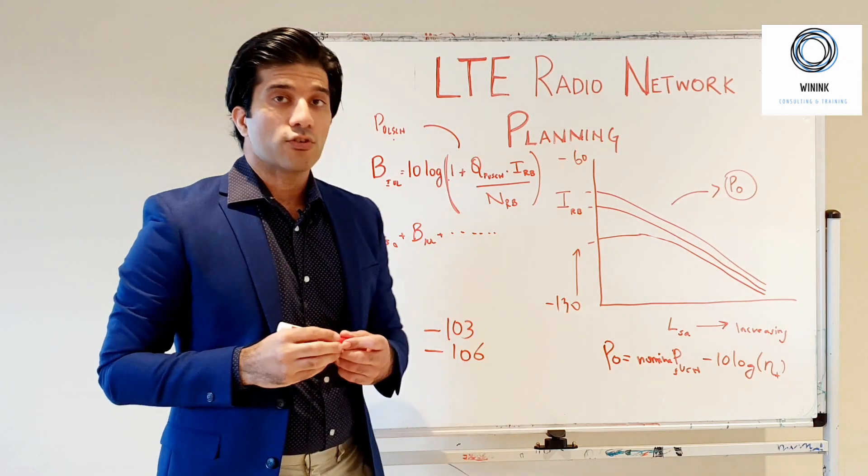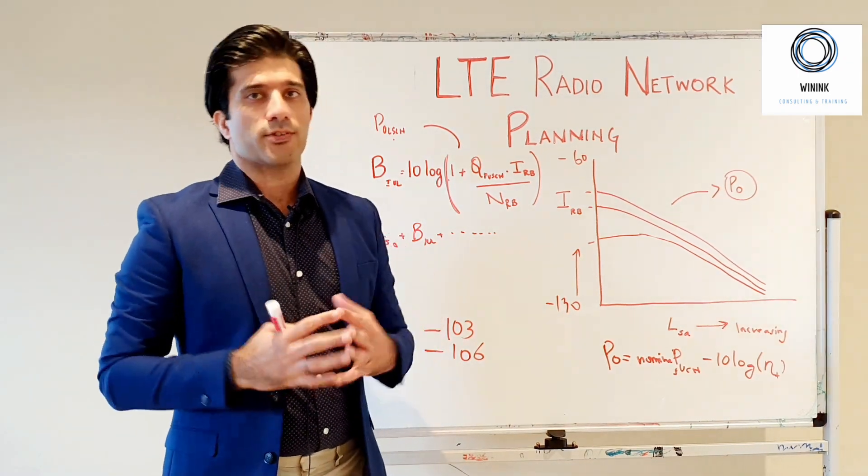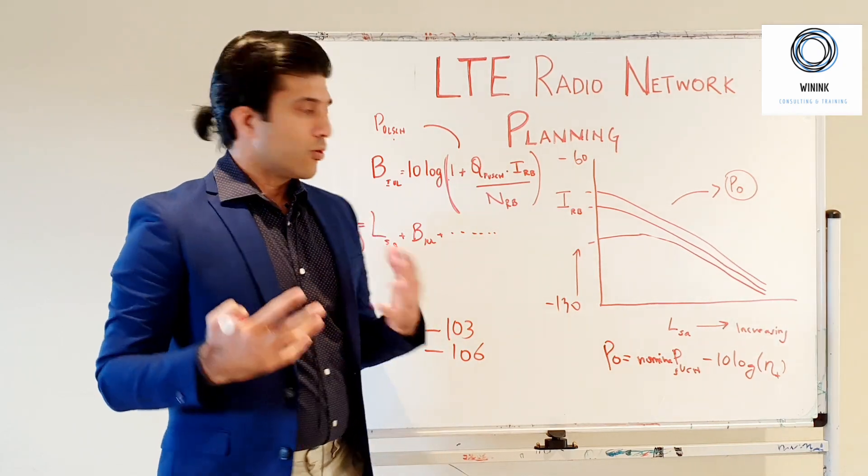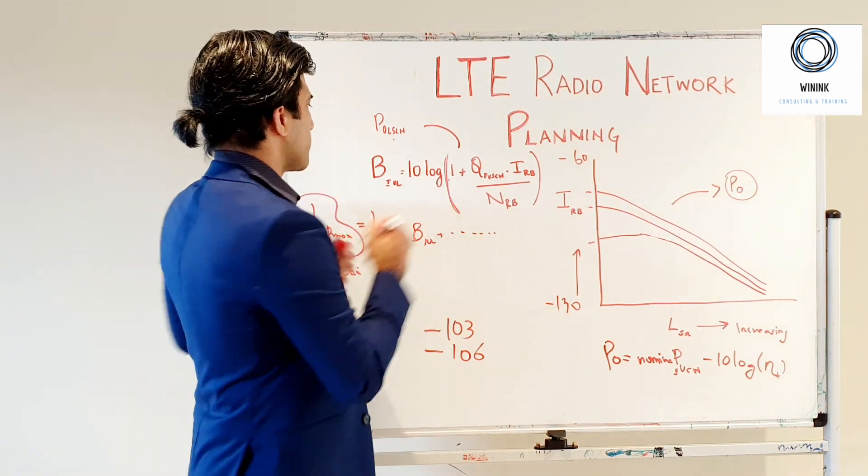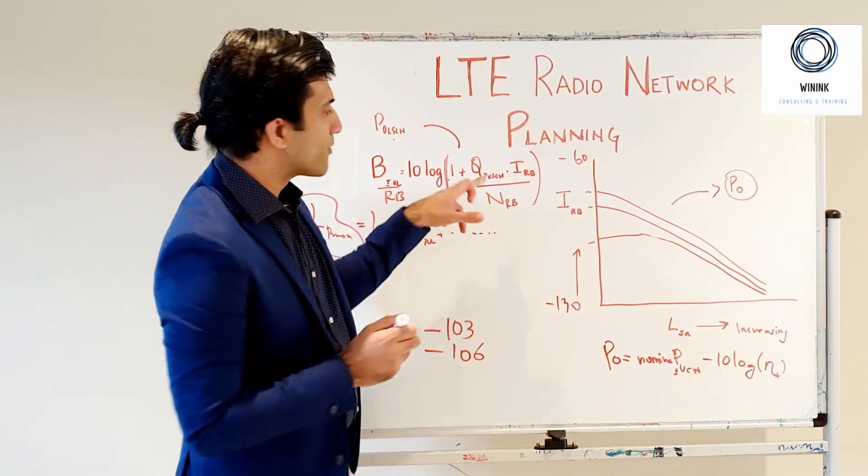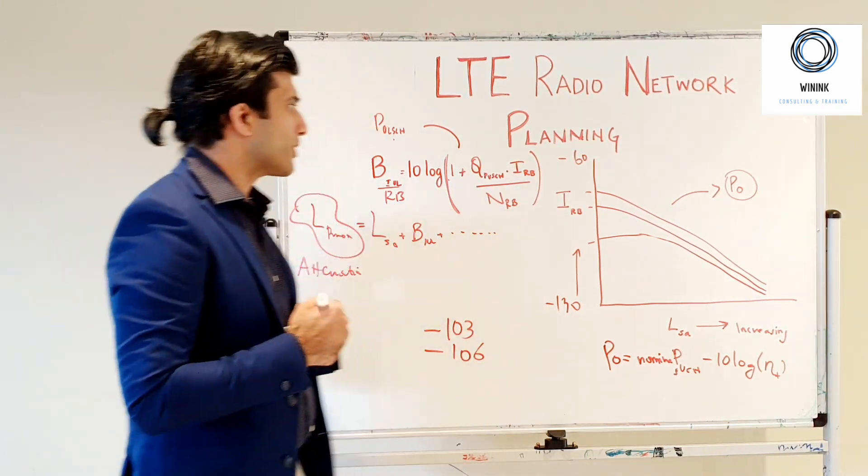This Q_PUSCH is your cell load. This represents the resources, the amount of resources or the amount of resource blocks that are being used for uplink shared channel.